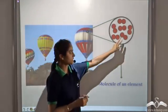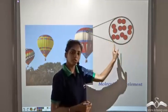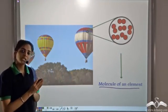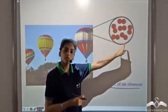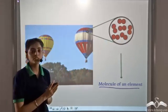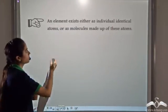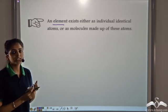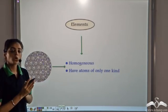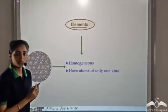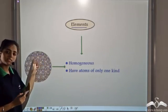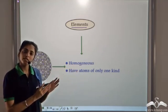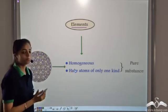When similar atoms combine to form a molecule which then comes together to form an element, we call that a molecule of an element. An element exists as either individual atoms or molecules made up of similar atoms. Elements are substances which are homogeneous — having the same composition throughout — and are composed of only one kind of atom. Any substance that is homogeneous and has the same kind of atoms is known as a pure substance.